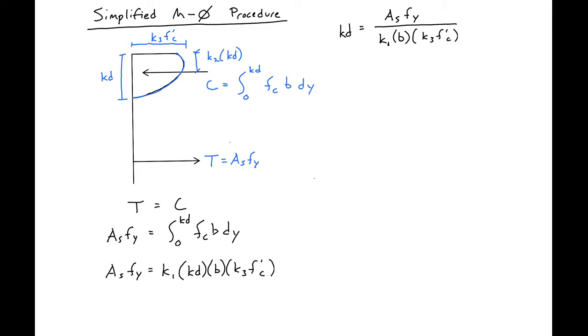We have several different constants here. K1 accounts for our stress block shape, so we'll call this a shape factor. K3 accounts for what we'll call Fc max, or the maximum relative compressive strength.